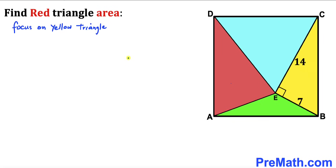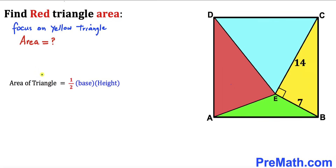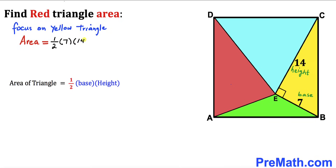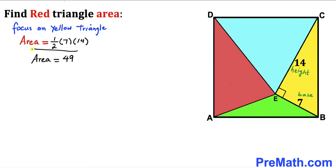Let's get started. Focusing on the yellow triangle BEC whose side lengths are 7 and 14, we calculate its area using the formula: area equals one-half times base times height. Our base is 7 and our height is 14 units. So the area of the yellow triangle is one-half times 7 times 14, which gives us 49 square units.